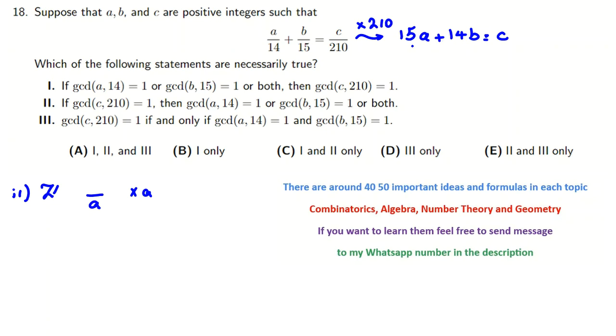Look, for example, GCD of A and 14, if it is not 1. Let's consider this case first. If GCD of A and 14 is not 1. Now, for example, suppose A is an even number, 2Q. Then GCD of A and 14 is at least 2. So this one will be what? Even, multiple of 2. This one is even, so C has to be even.